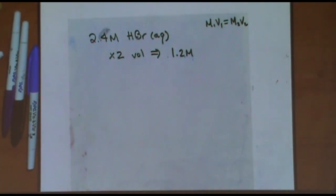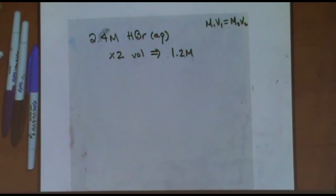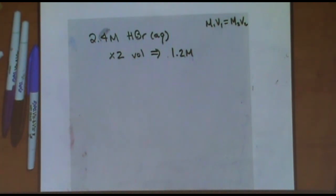So if you double the volume — whatever you do, double, triple, whatever — to the volume, the molarity goes half, third, etc., and vice versa. Because of that relationship in the M1V1 equation.